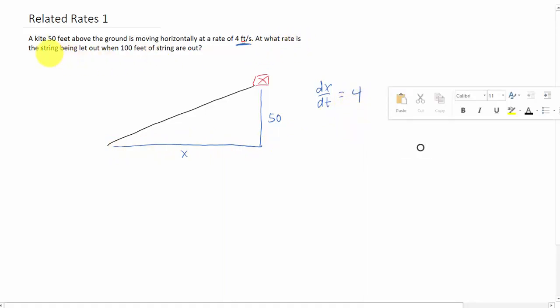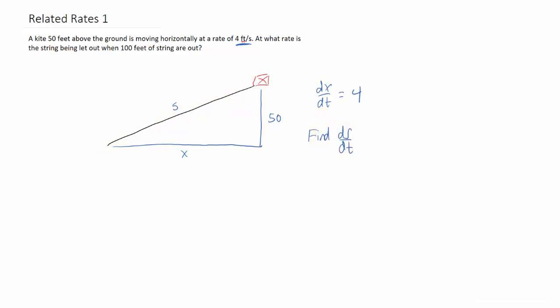Now we're asked to find at what rate is the string being let out. So we need to define this variable which is the amount of string that is out, and we need to find ds/dt.